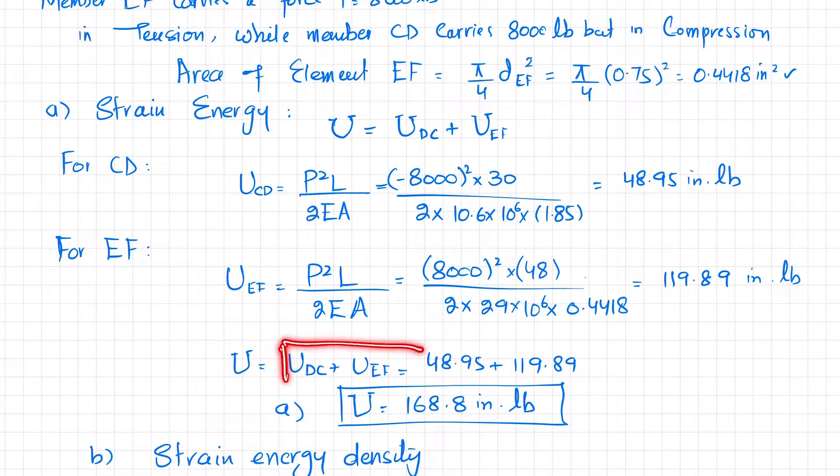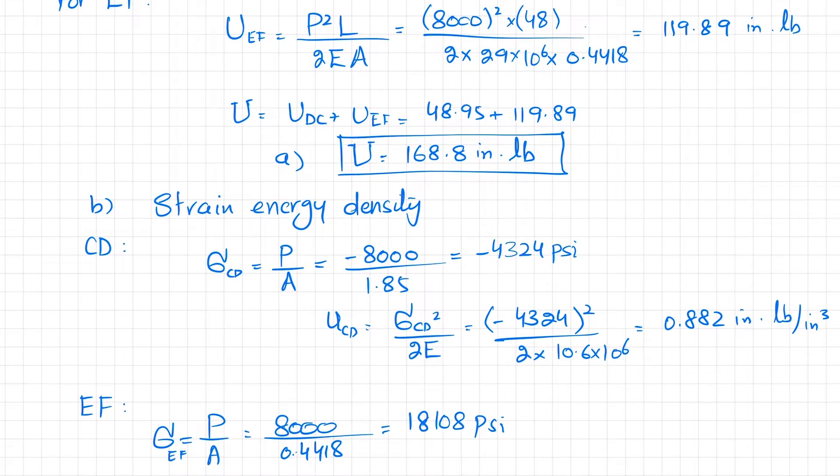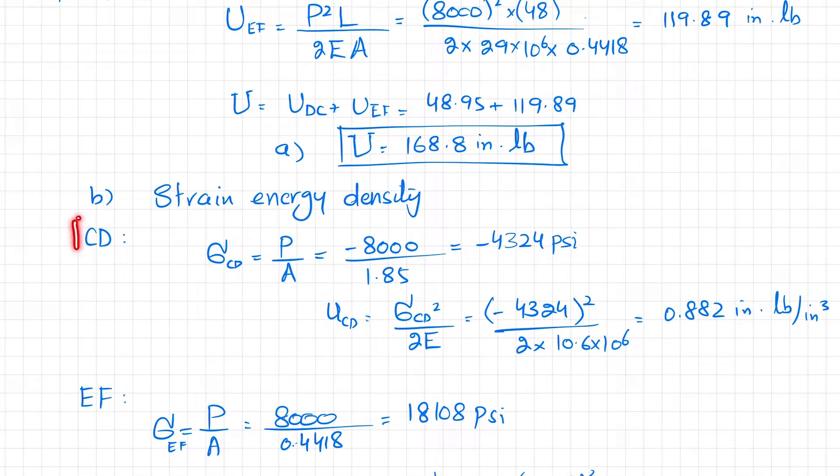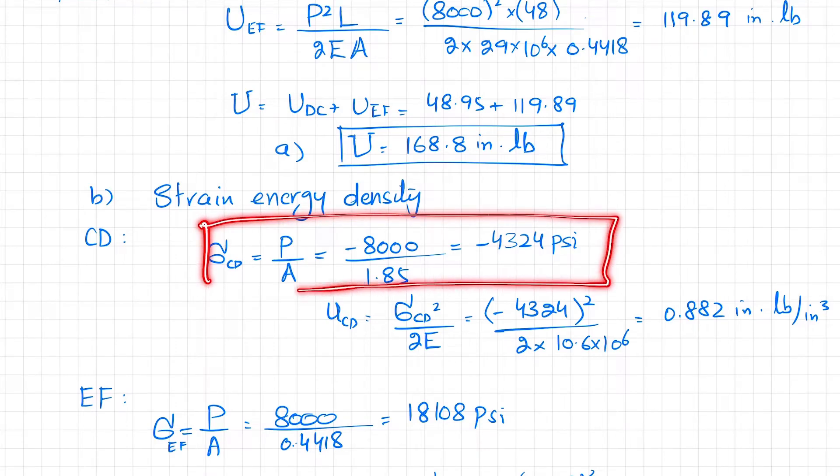Now you have to add both of them to get the total strain energy, so the total strain energy will be 168.8 inch-pounds. Next, what will be the strain energy density? For aluminum pipe CD, stress equals P/A. The stress is load -8000 because it's in compression, divided by the area of aluminum pipe, which gives you the stress in aluminum pipe as -4324 psi.